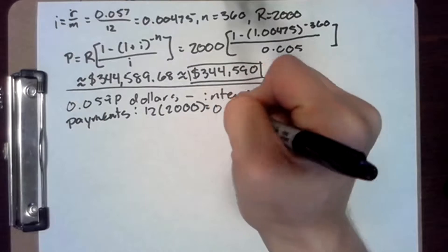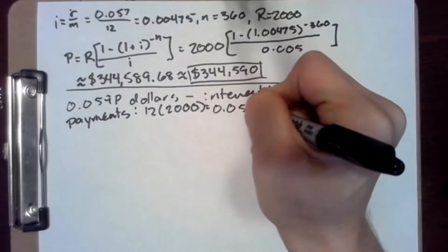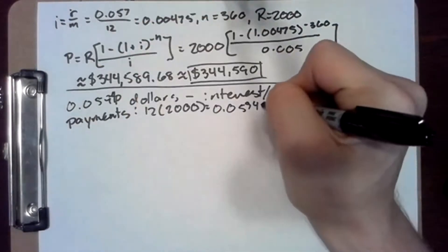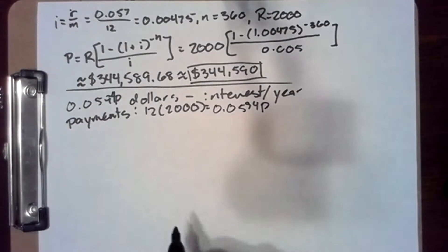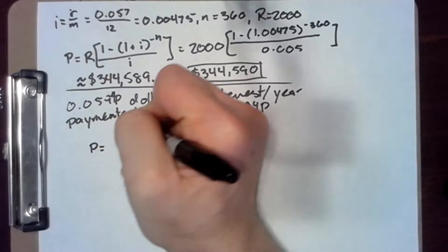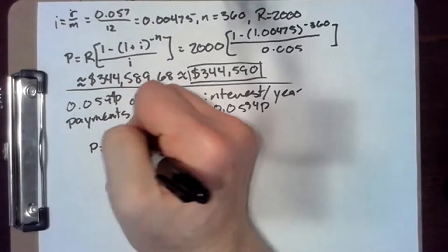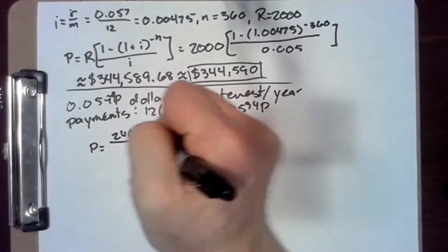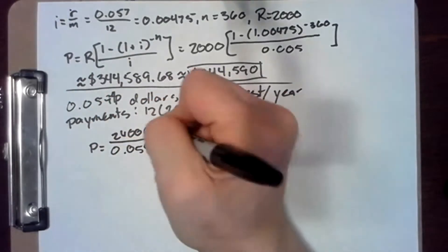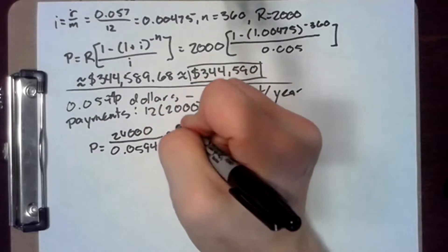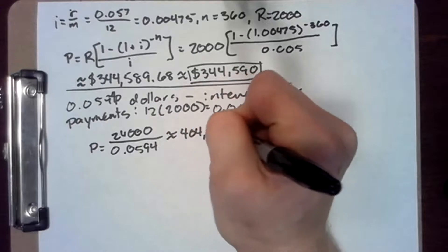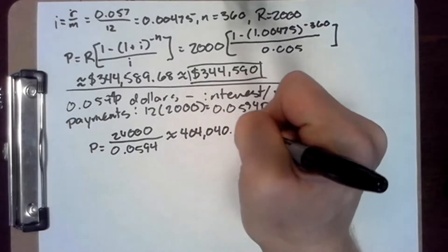That's equal to 0.0594P. Then P equals 12 times 2000, or 24,000, over 0.0594, which is approximately $404,040.40.